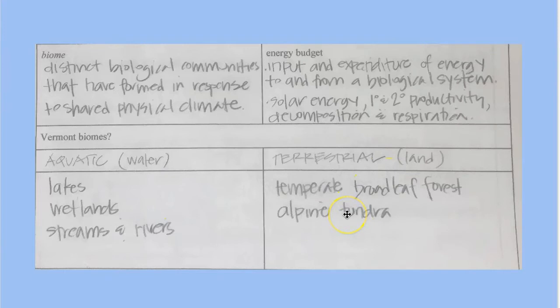We also have two different terrestrial biomes. We have terrestrial temperate, broadly, forests. Temperate means we have seasons. Terrestrial means they're land biomes.